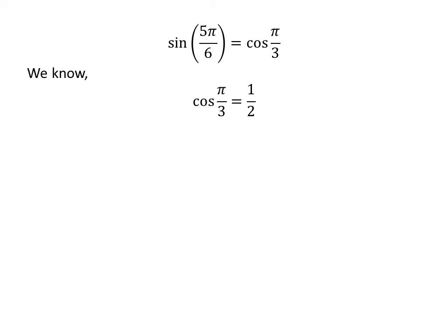We know cosine of pi upon 3 is equal to half. So sine of 5 times pi upon 6 is equal to half.